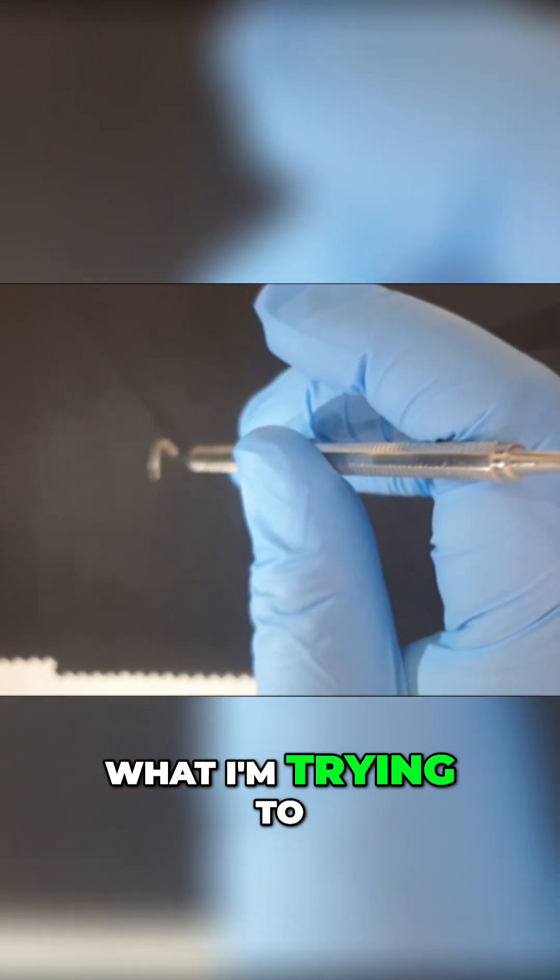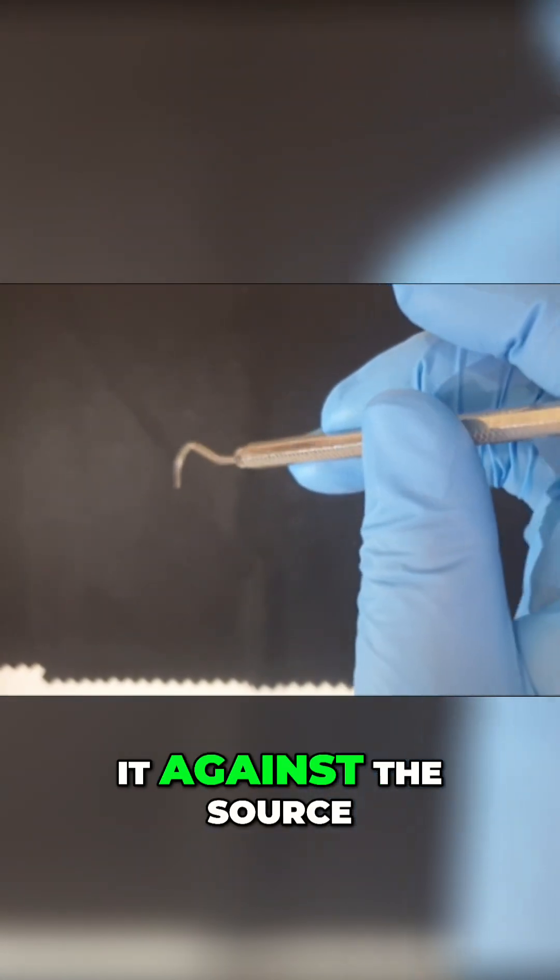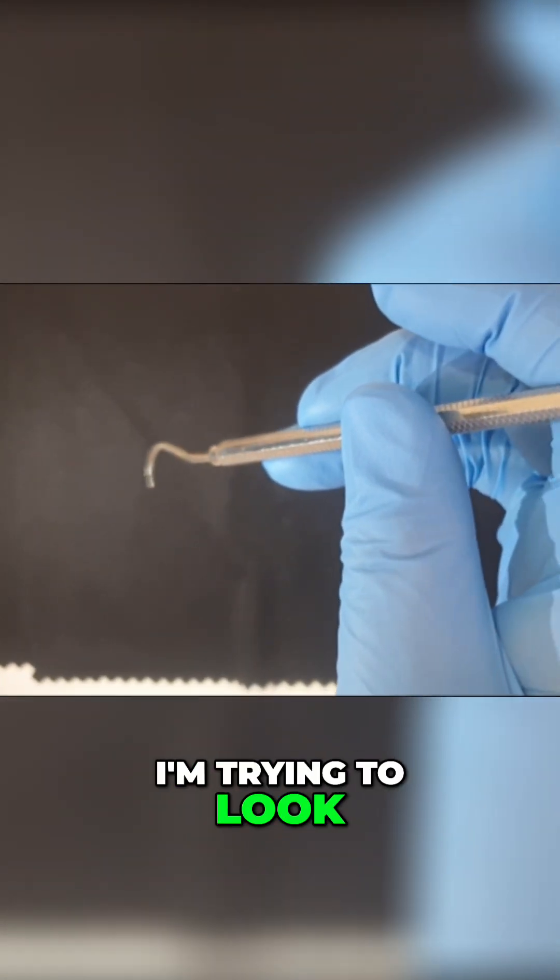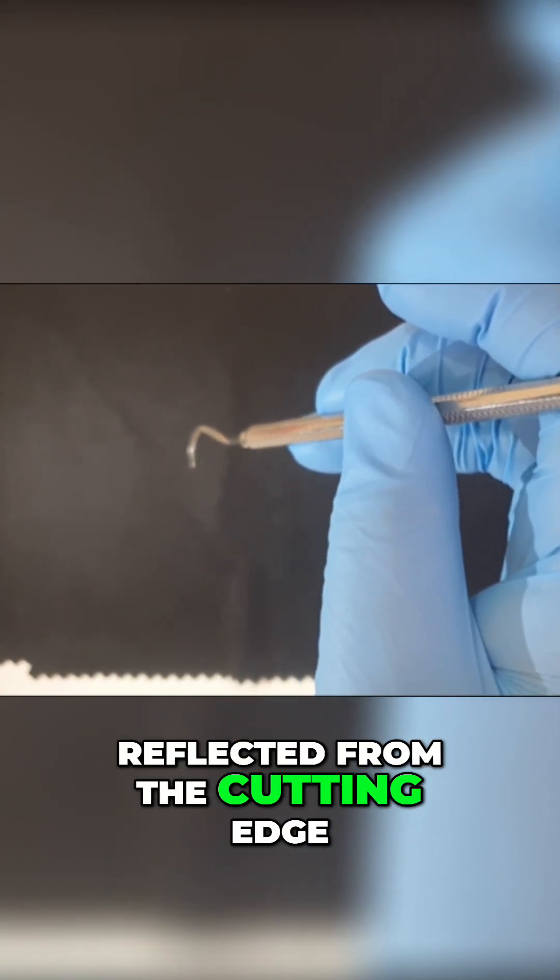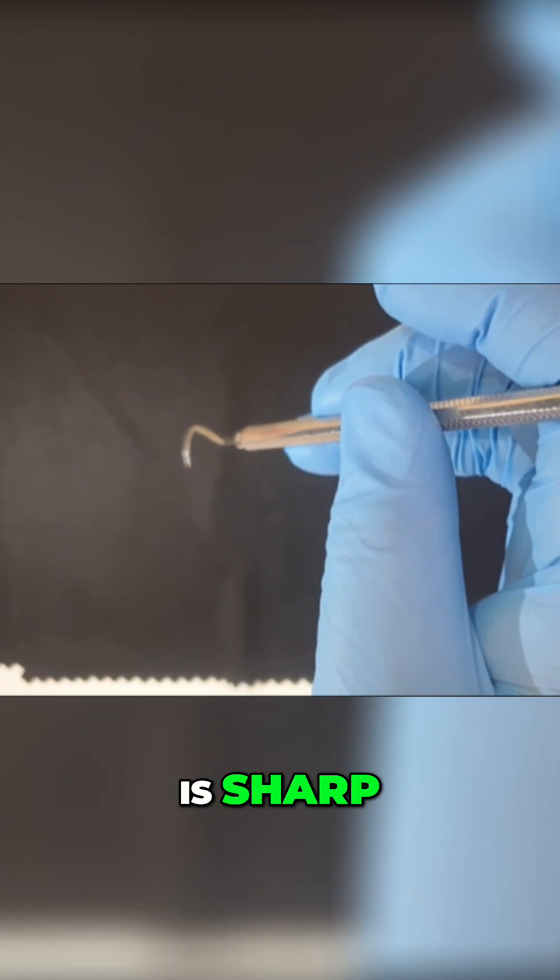Now what I'm trying to do is hold it against the source of light. I'm looking at the cutting edge. I am not able to see any light being reflected from the cutting edge. That means my instrument is sharp.